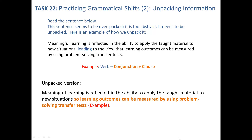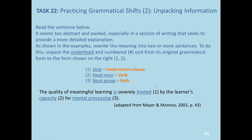Let's move on to task 22 itself. You might find that this sentence — 'The quality of meaningful learning is severely limited by the learner's capacity for mental processing' — is too abstract and packed for some readers, especially in a section of writing that calls for more detail or more unpacking of the thinking process. The task is to rewrite the meaning into two or more sentences by unpacking the underlined and numbered unit: a verb to a conjunction and clause, a head noun to a verb, and a noun group to a verb. Please pause the video here and try this task out.